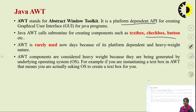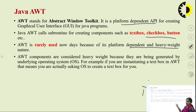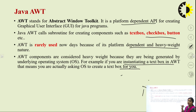Nowadays AWT is rarely used because of two disadvantages: first, it is platform-dependent, and second, it has a heavyweight nature. AWT is considered heavyweight because all components used in an AWT container totally use the resources of the operating system. For example, when you initiate a text box in AWT, you are actually asking the operating system to create that text box for you.